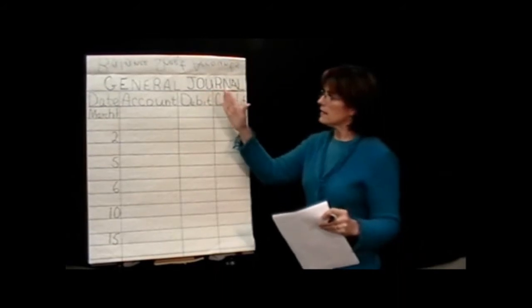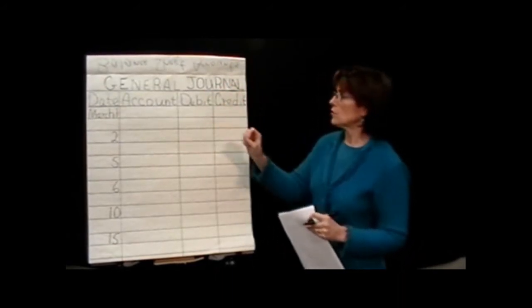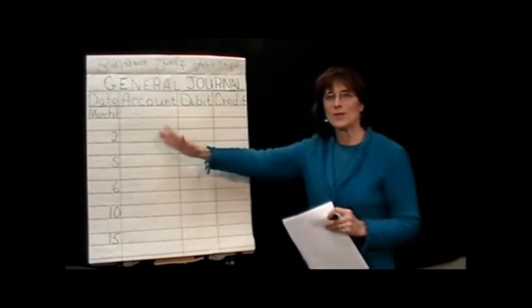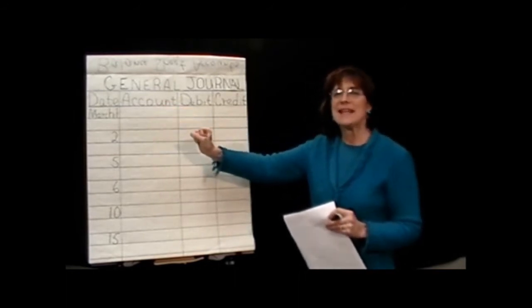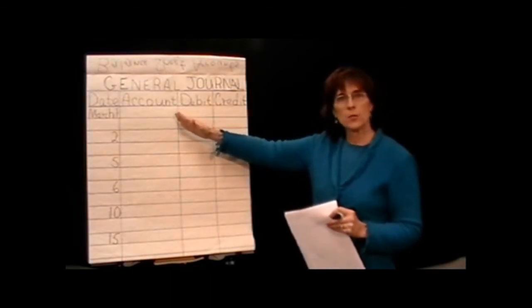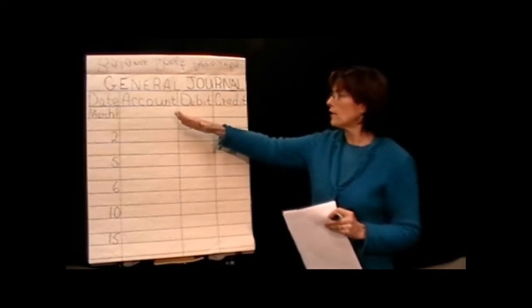So looking at this, this is a general journal. There's four columns in a general journal. Over here on the far left-hand side, we have the date column because transactions are recorded in date order. Then in the next column, we have a place to put the account name. We're going to be trying to figure out what accounts belong on these lines.